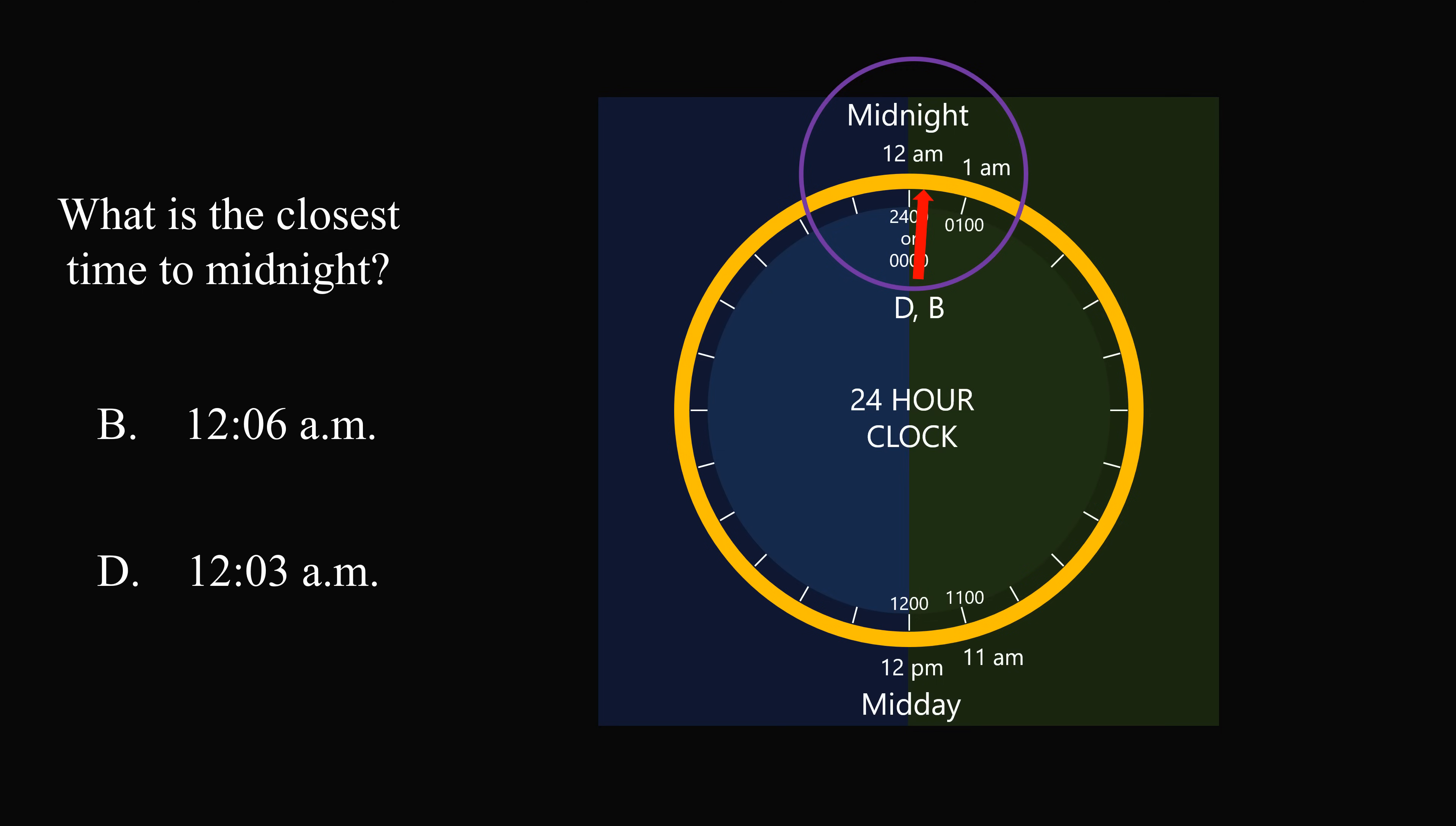Now, 12.06 a.m. is 6 minutes after midnight, and 12.03 a.m. is 3 minutes after midnight. 3 minutes is closer. We can eliminate answer choice B, and therefore, the correct answer is D. 12.03 a.m. is 3 minutes, and that's the closest time to midnight.